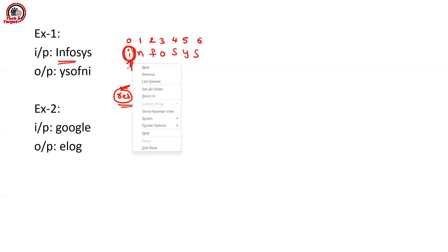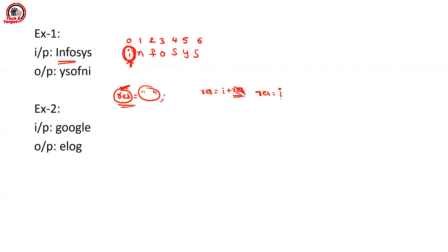So: 'I' is not present in the result string (which is currently empty), so result becomes 'I'. Next, 'N' is not present in result 'I', so we add N at the beginning — result becomes 'NI'. Next, 'F' is not in the result string, so we add F at the beginning. Then 'O' is not present, so we add O at the beginning.